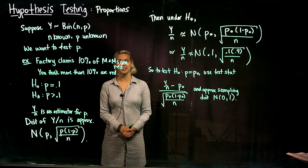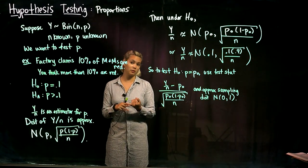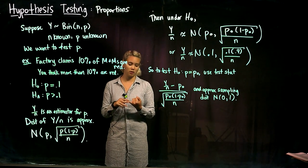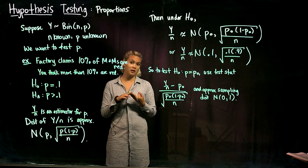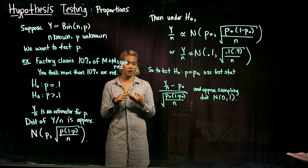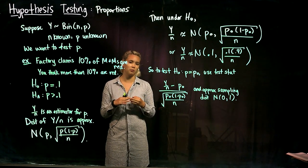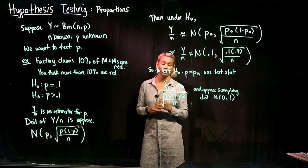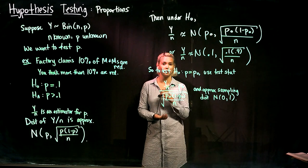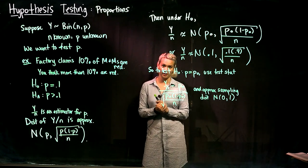So far, we've talked about hypothesis testing for one mean when sigma squared was known, one mean when sigma squared was unknown, and two means when sigma squared was unknown. We also touched a little bit on two means when sigma squared was known. Now we're going to start talking about proportions, so we're still doing hypothesis testing but now focusing on a proportion rather than a mean.